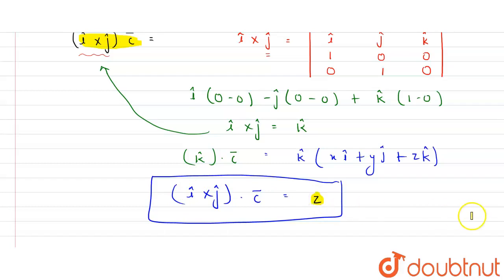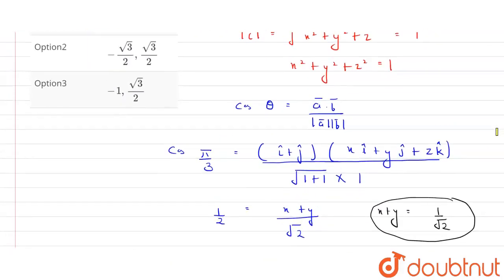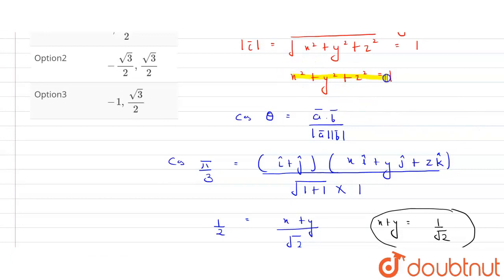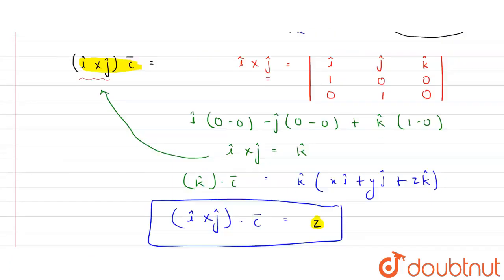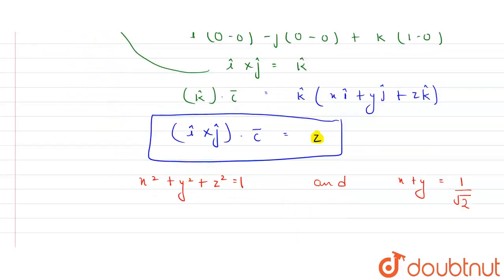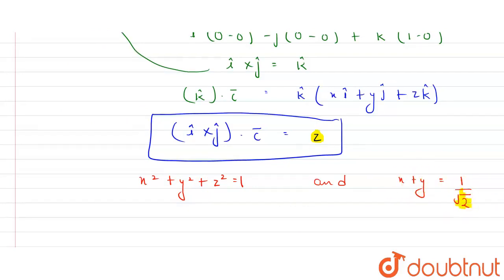We now have two equations: x² + y² + z² = 1, and x + y = 1/√2. For both conditions to hold simultaneously, x and y must each equal 1/(2√2). This is the symmetric solution that satisfies the sum condition x + y = 1/√2.